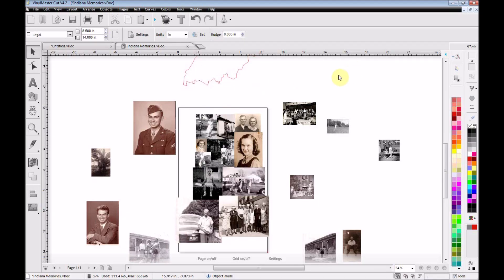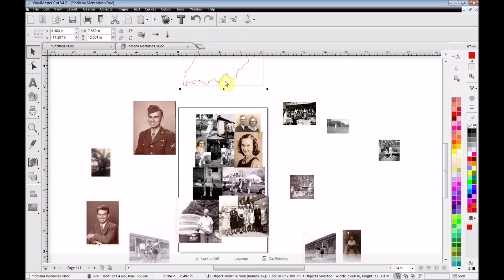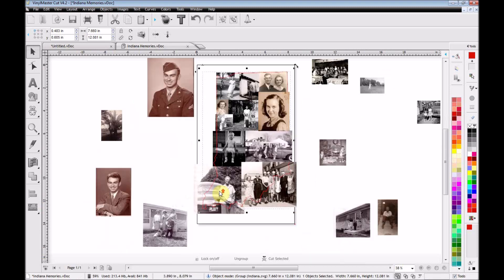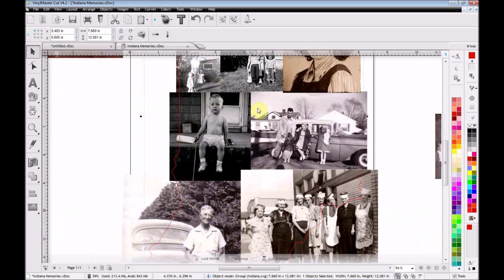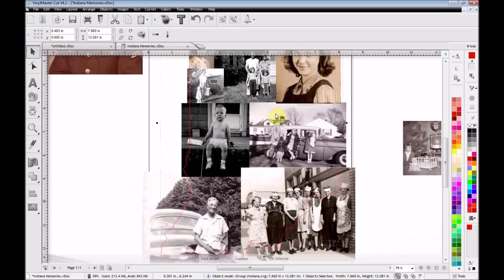Once I narrowed down which photographs I wanted to use, I arranged them kind of in the shape of Indiana. Indiana is a tough state to arrange photographs in, but I used the outline here and made sure that I was going to get full coverage over the piece of MDF and also zoomed in here and made sure I wasn't going to cut anybody's head off or something like that.